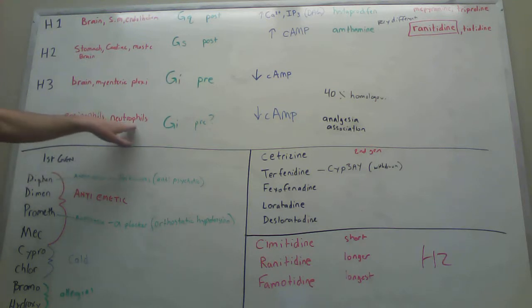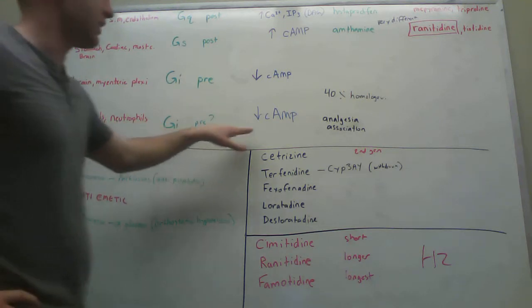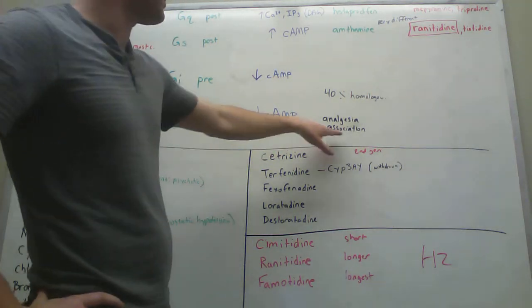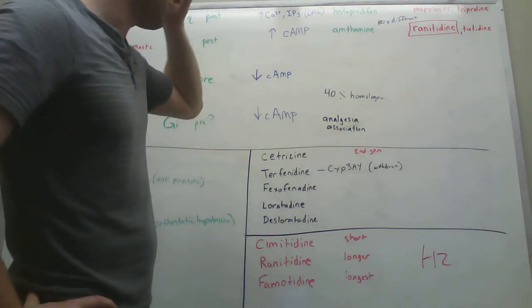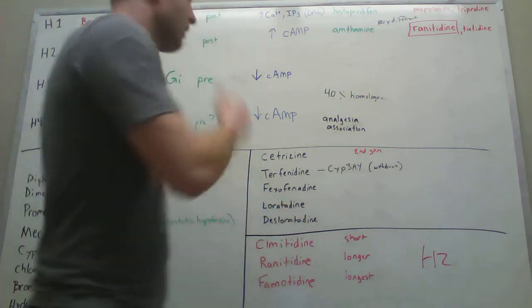H4, eosinophils, neutrophils, CD4 T cells, Gi, maybe pre, also decrease cyclic AMP. They're associated with analgesia or pain.